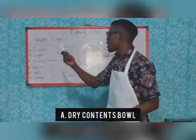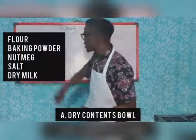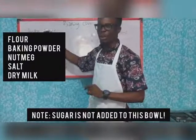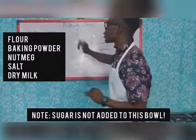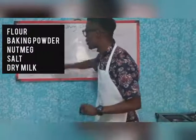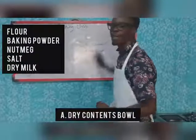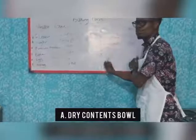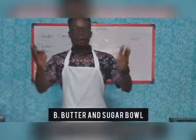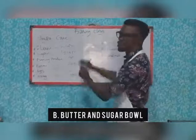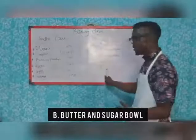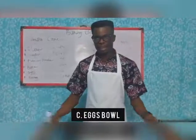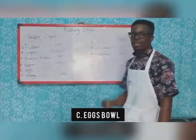The dry contents on the board — the only dry content we're not adding to the first bowl is sugar. So to the first bowl we're adding flour, baking powder, nutmeg, salt, and powdered milk — those are the dry contents. To the second bowl, we are going to add the butter and the sugar. To the last bowl, we are going to add our eggs.